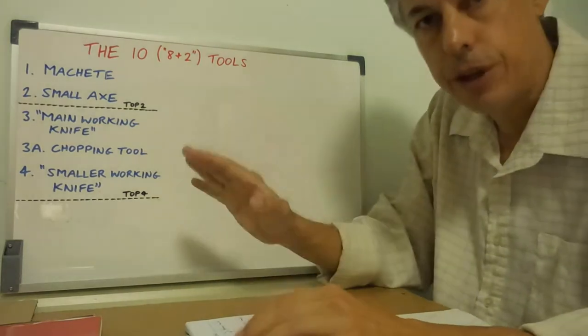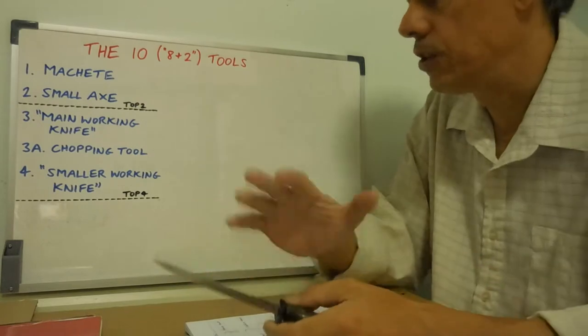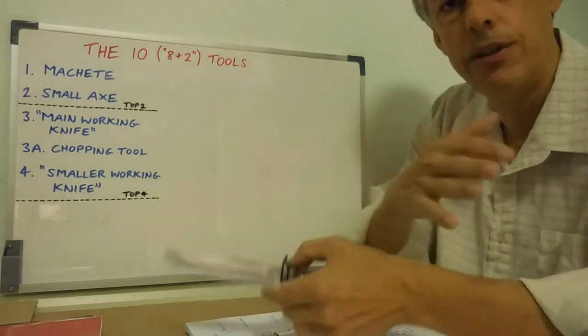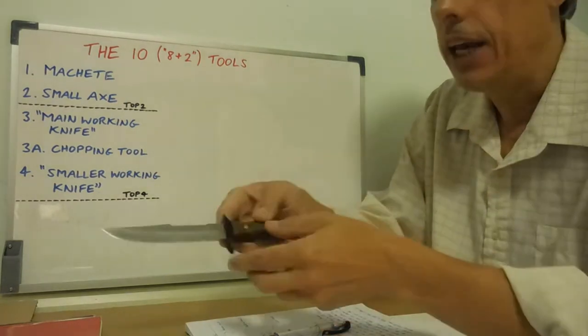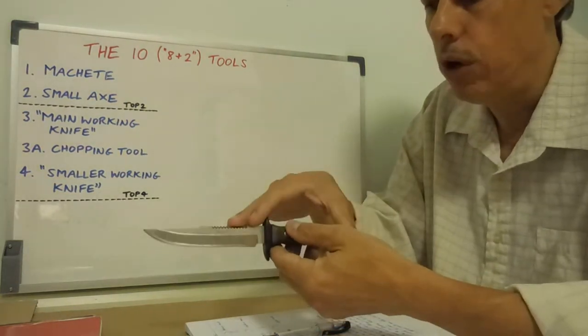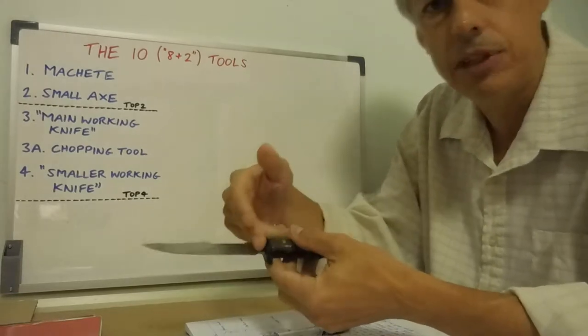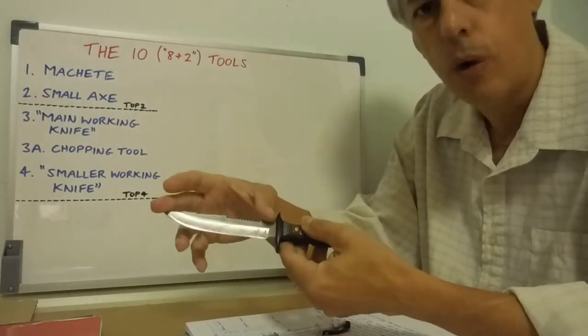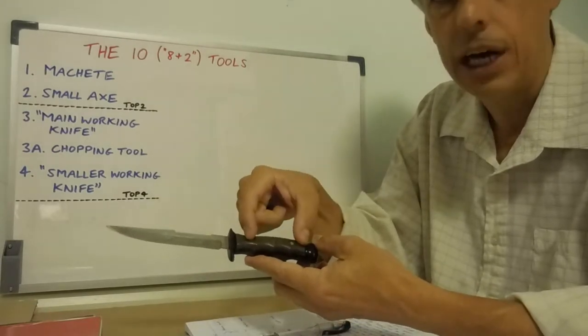We'll leave 3A for the time being and talk about number 4. So number 4 is going to be a smaller working knife. Again, a concept I've talked about in a previous video in this playlist. And here's an example of a smaller working knife. I'm not saying you have to have this. It's just an example. It happens to be a Morakniv knife, 4.5 inch blade, with a rat tail tang coming into the handle with a couple of bolts there.